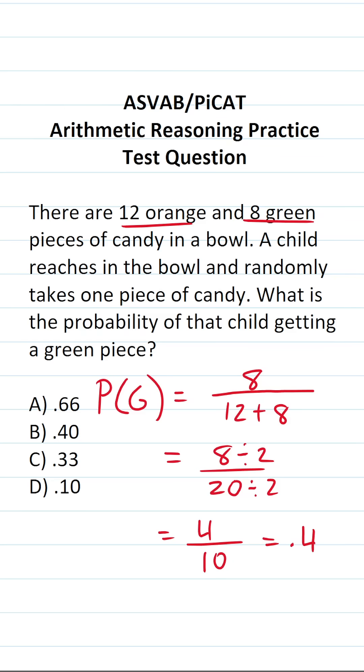So the probability of that child getting a green piece of candy is B, 0.4, which is the same thing as 40%.